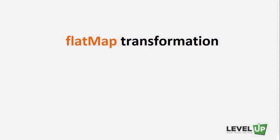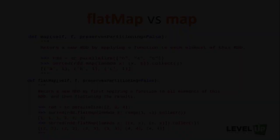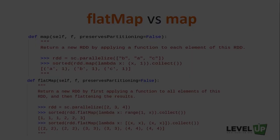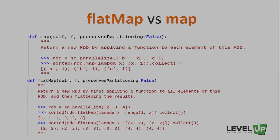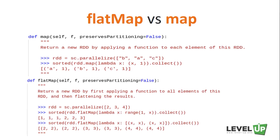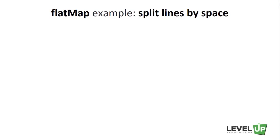In this lecture, we're going to talk about another popular transformation called flat map. Sometimes we want to produce multiple elements from each input element — this is where flat map comes in handy. As with map, the function provided to flat map is applied to each element of the input RDD, but the results are flattened before being returned.